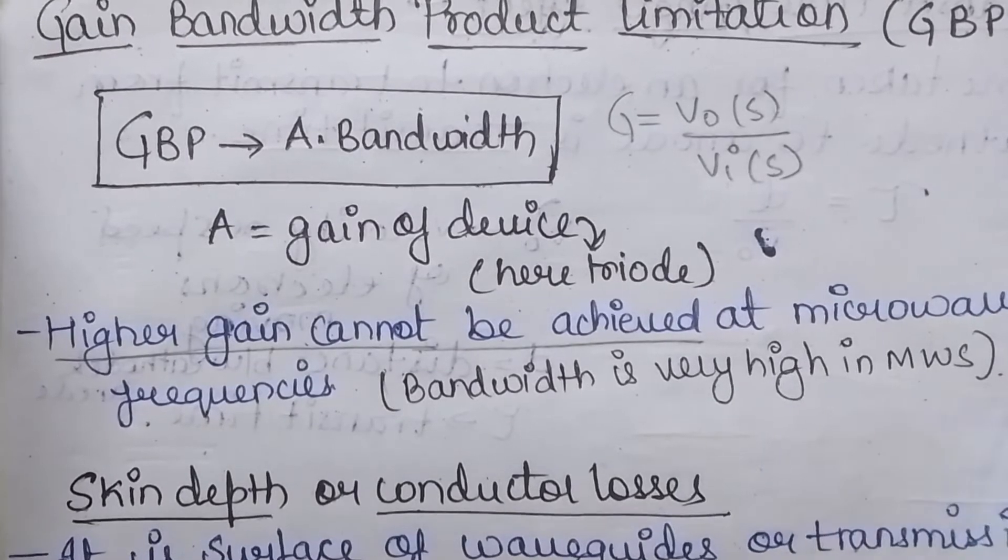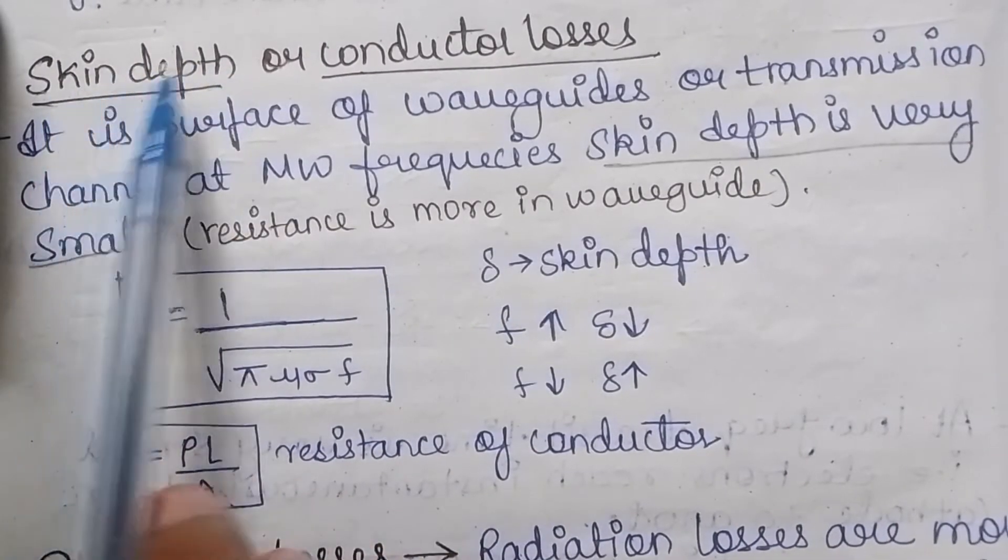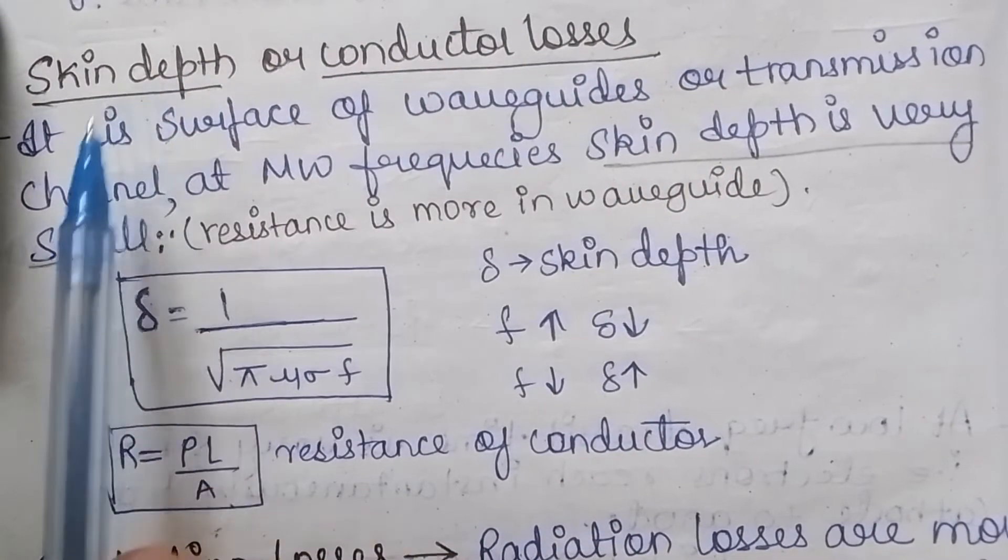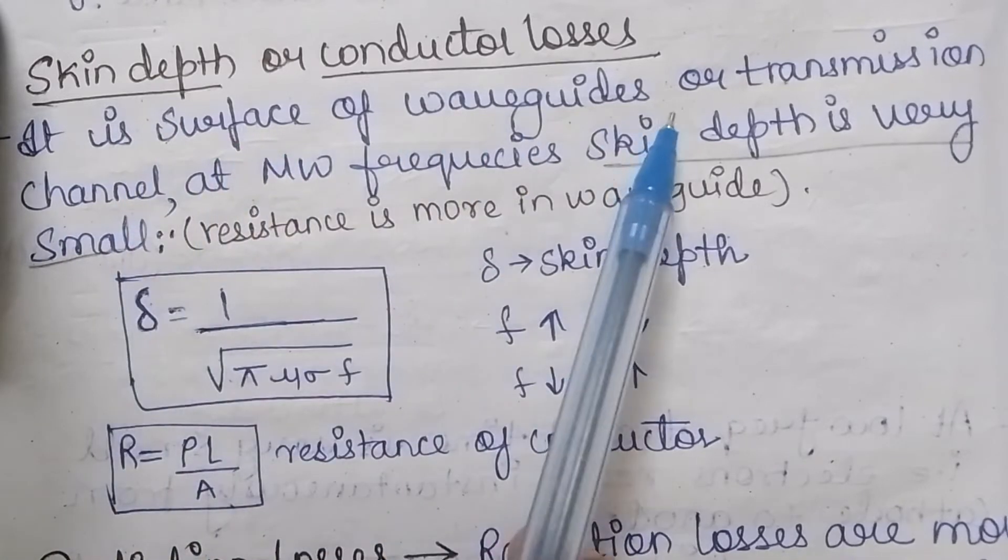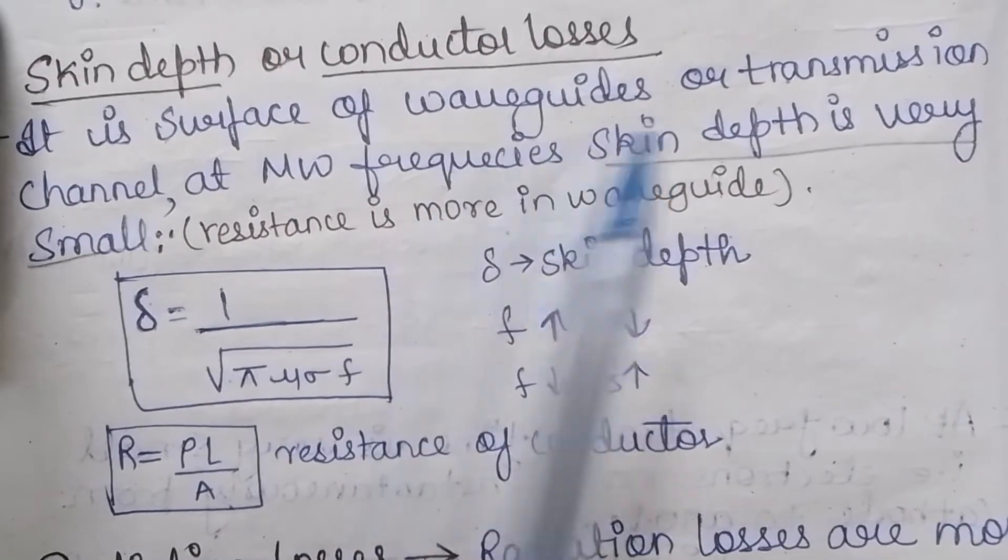Now the next limitation is skin depth or the conductor losses. So what is skin depth? It is the surface of the waveguides or the transmission channel. At the microwave frequencies, skin depth is very small since the resistance is more in the waveguides.